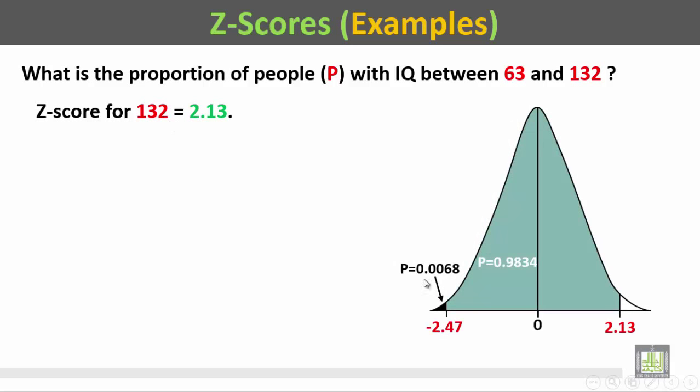P to the left of 2.13 is 0.9834, and P to the left of minus 2.47 is 0.0068.